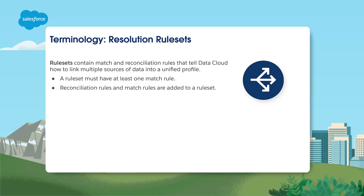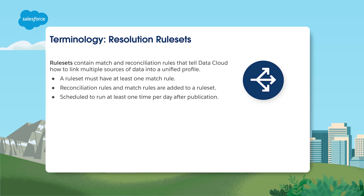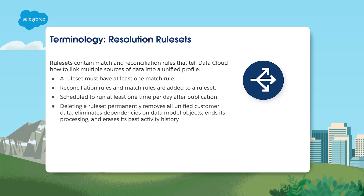Resolution rule sets are pivotal to identity resolution. A rule set contains match and reconciliation rules. Such a rule set can be scheduled to run daily after being published, or it can be run manually on an ad hoc basis. Deleting a rule set removes all the underlying unified customer data.